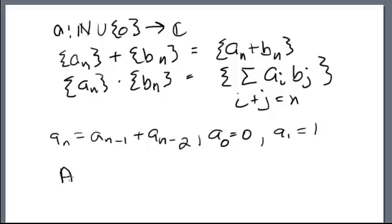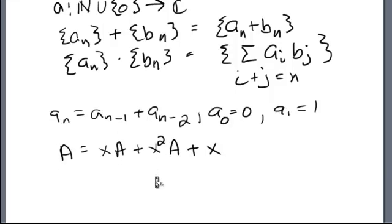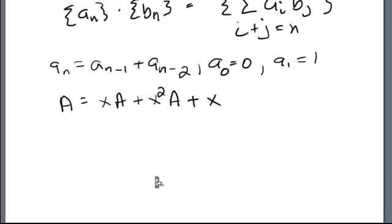We did just that. We said that a — which is a generating function for a sequence — is equal to x times a, where x is a generating function for a sequence, plus x squared times a, plus x. So we took this recurrence relation and transformed it into an algebraic equation involving sequences. Now we want to solve this equation, and we're going to start working on the algebra of sequences today.